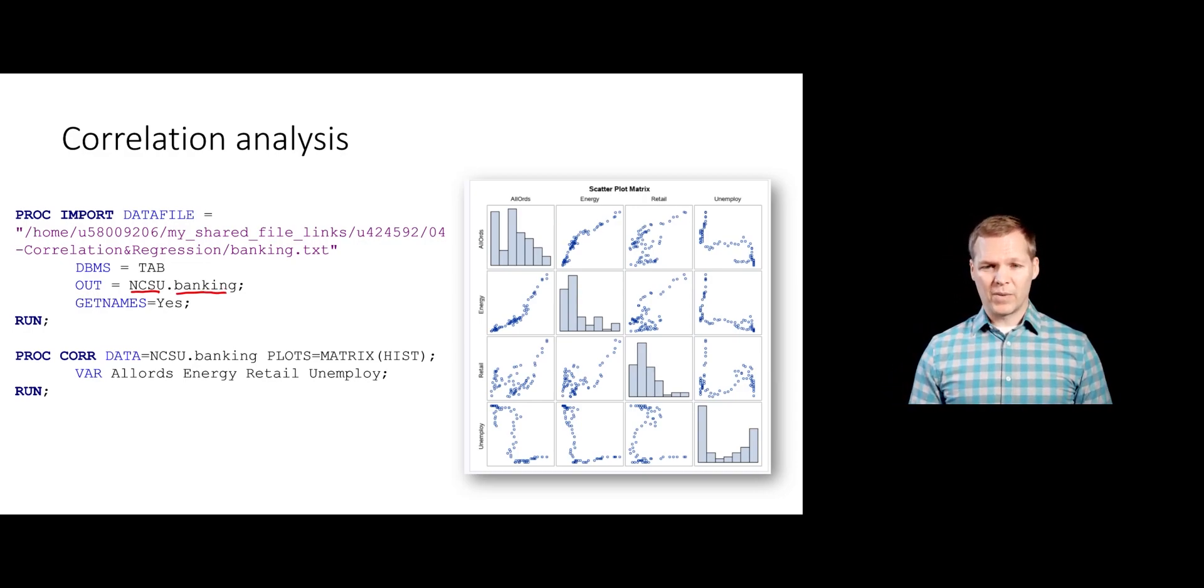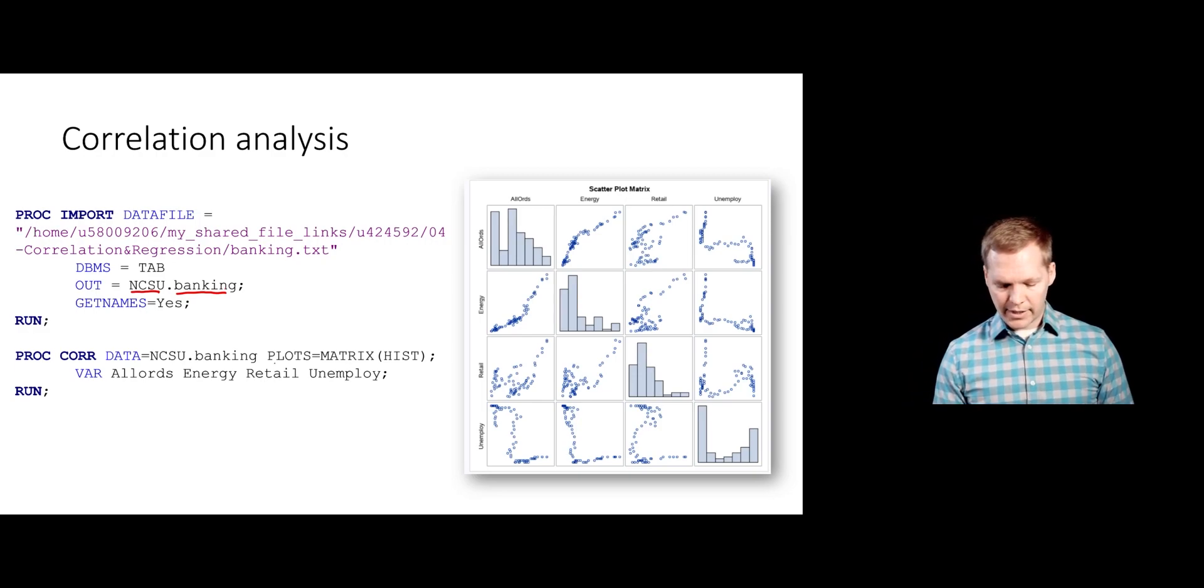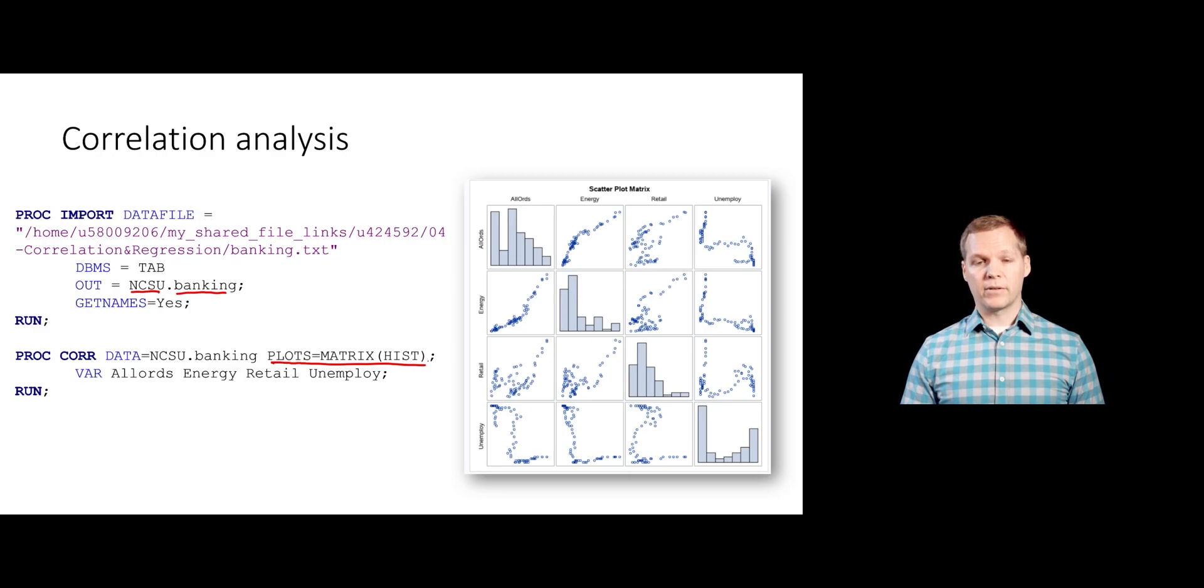Once I've done that, I can go to PROC CORR, specify that dataset. Notice again that I'm going to use this plots equals matrix hist option on my PROC CORR statement. That's going to create these lovely plots that you see over here. It gives us a matrix of scatter plots. We have scatter plots between all of our variables, but then we also have a histogram of the variable itself going down the diagonal. This really does give us quite a bit of information about these variables we've specified.